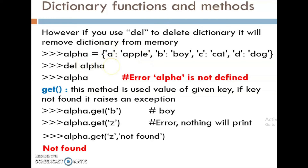What is the difference between del and clear statements? The clear statement removes all the elements from the dictionary. The del statement removes the dictionary from the memory itself — that is the difference. Next one, get function.